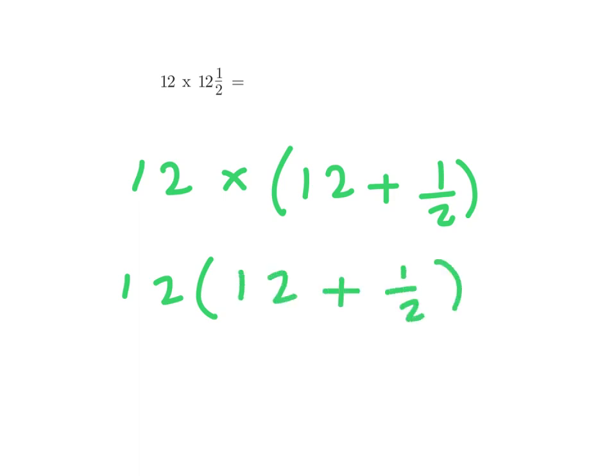I'm going to multiply 12 times 12, and that equals 144. Then I'm going to multiply 12 times one half. Another way of saying that is half of 12. Well, half of 12 is 6.